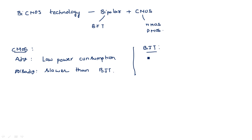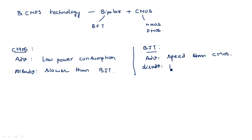Coming to the advantages and disadvantages of bipolar technology — the BJT advantage is speed of operation, which is faster than CMOS technology. The disadvantage of BJT is high power consumption — quite the opposite of CMOS. So by combining the low power advantage of CMOS with the speed advantage of BJT, we get a low power consumption at high speed BiCMOS inverter.